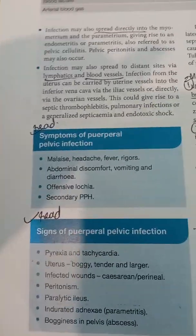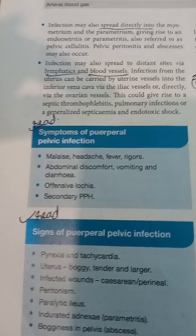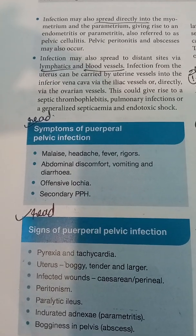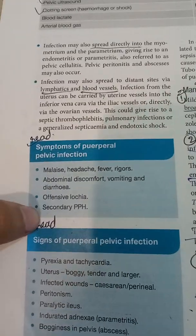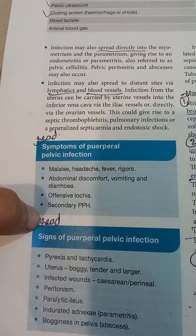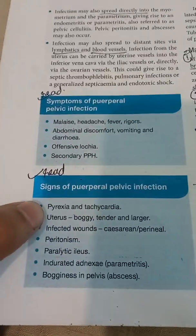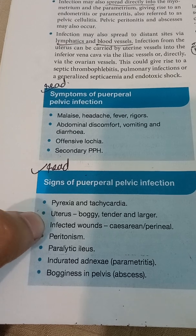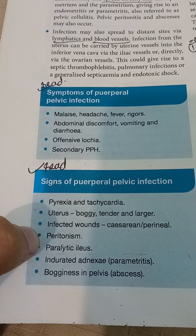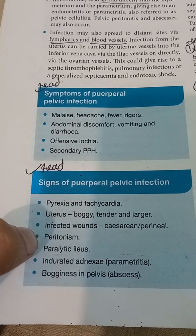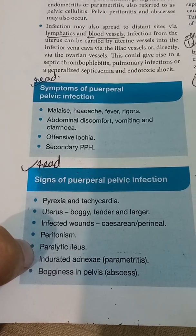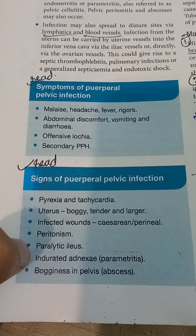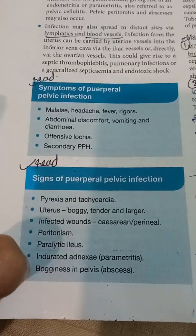Signs and symptoms of puerperal pelvic infection: malaise, headache, fever, rigors, abdominal discomfort, vomiting, offensive lochia, and secondary PPH. Signs include pyrexia, tachycardia, boggy and large uterus, infected perineal wounds, peritonism, paralytic ileus, peritonitis, indurated tender perimetritis, bogginess, and pelvic abscess. A pelvic abscess must be drained.